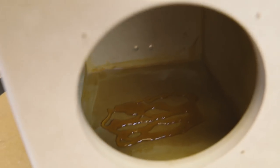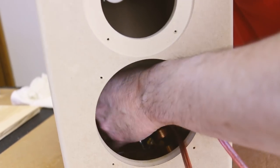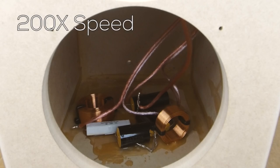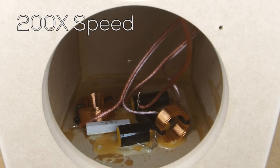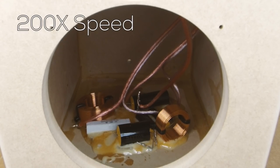Pour some Gorilla Glue on the inside bottom of the enclosure and place your crossover inside. After some time, you'll start to see the glue rise, locking in the crossover.